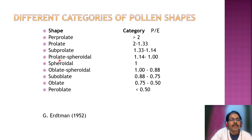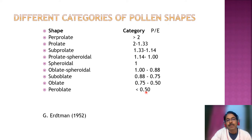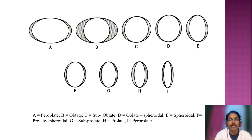Prolate spheroidal has a ratio of 1.34 to 1, spheroidal has a ratio of 1, oblate spheroidal ranges from 1 to 0.88, sub-oblate from 0.88 to 0.75, oblate from 0.75 to 0.50, and per oblate is less than 0.50. So the ratio of the polar axis and equatorial axis defines the shape of the pollen grain. In this diagram we can see different shapes of the pollen grain.